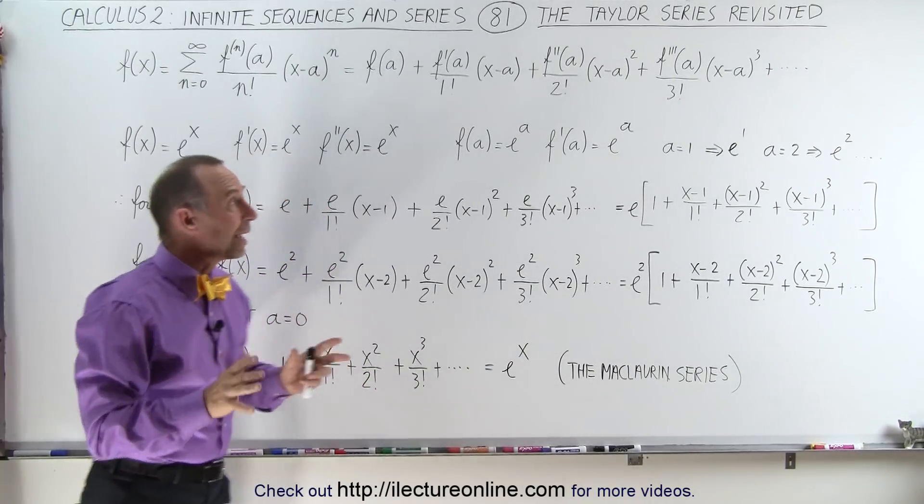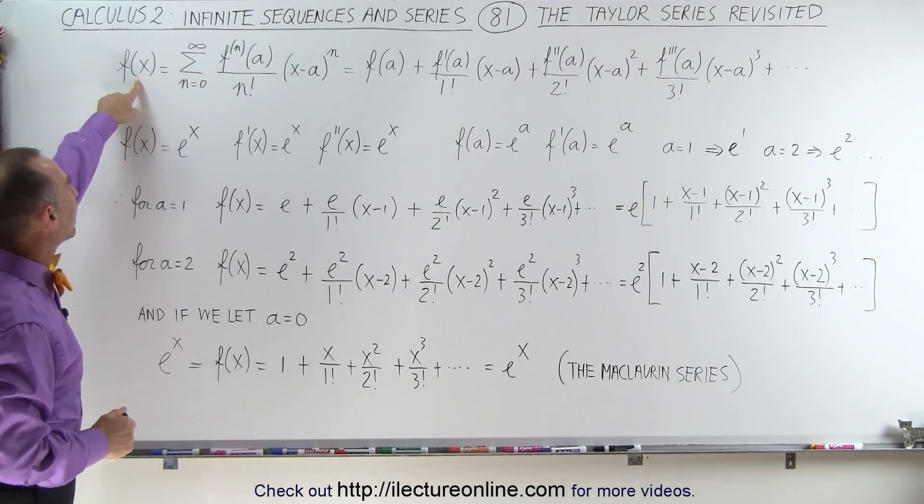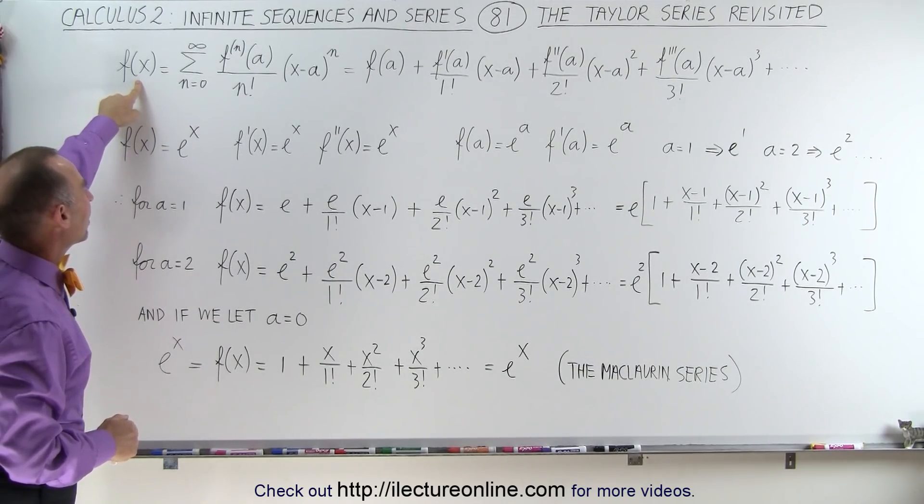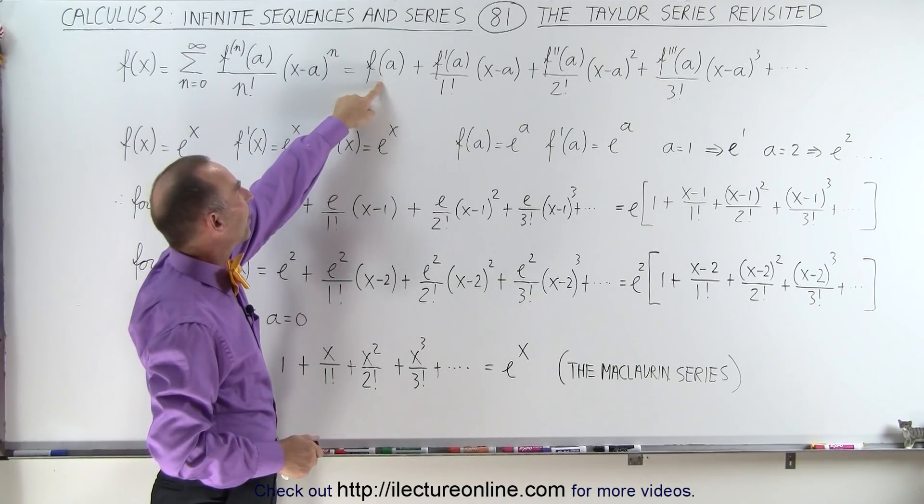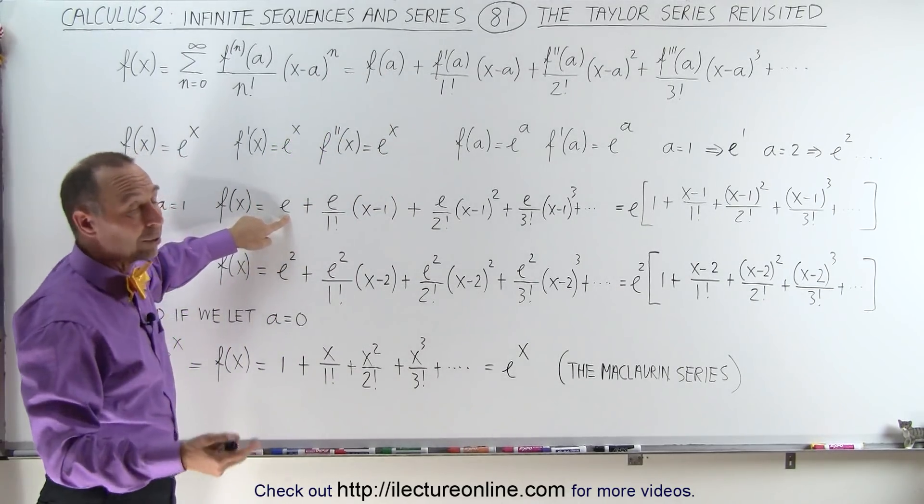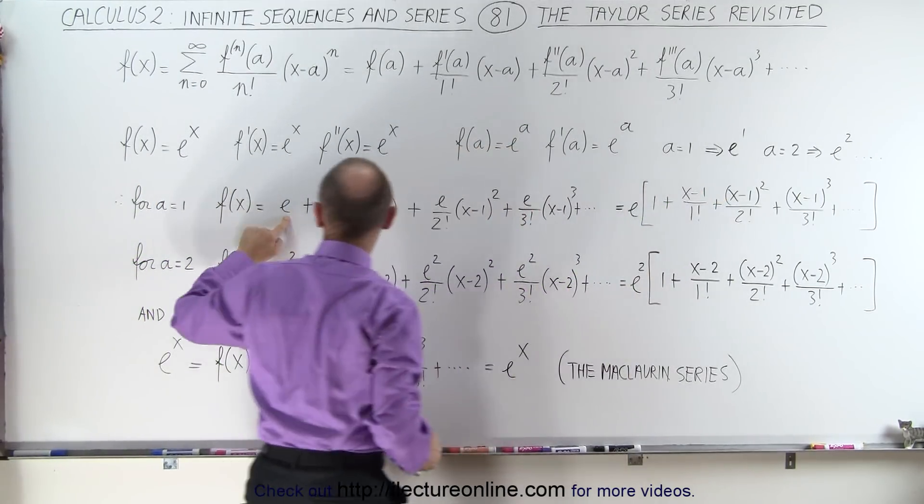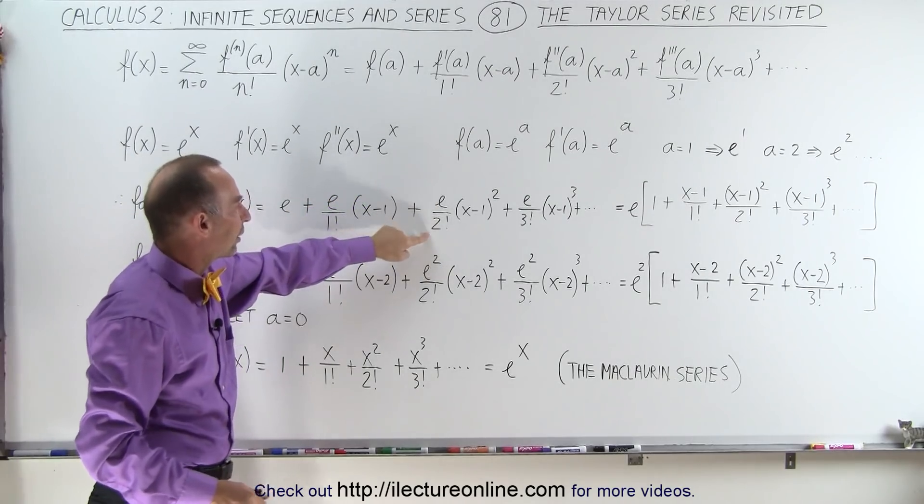Now, let's write out the Taylor series for a = 1. So again, we go to this initial function representation, and then we write that the first evaluation of the function at a, since a is equal to 1, will simply be equal to e, because it was e to the first power. Then we have e divided by 1 factorial, e divided by 2 factorial, e divided by 3 factorial, and so forth for the coefficients.